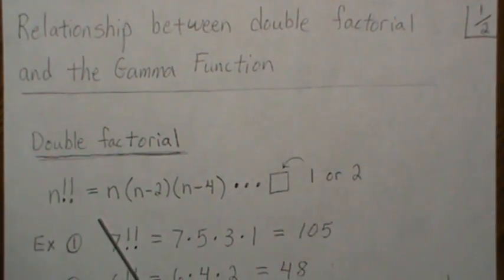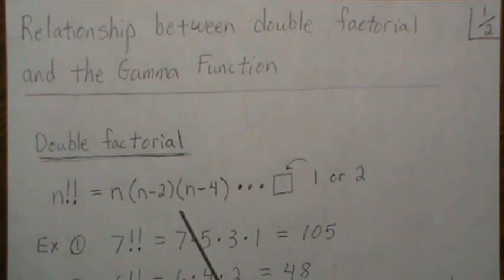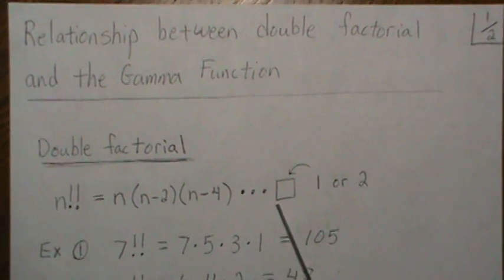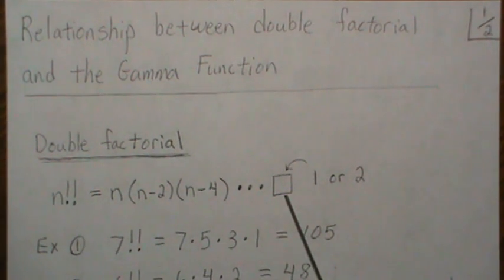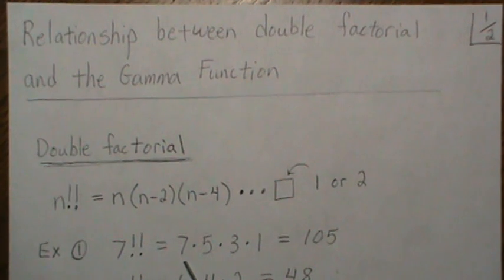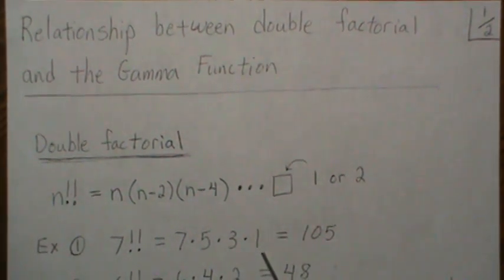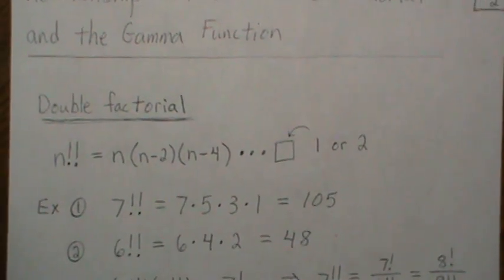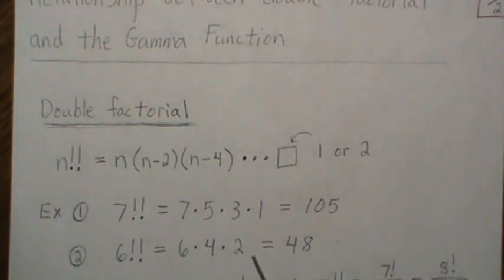The double factorial means you start at n and subtract two, subtract two more, and keep going until you get to a one or a two, and then you stop. For example, seven double factorial is seven times five times three times one, which is 105. Six double factorial means six times four times two, which is 48.